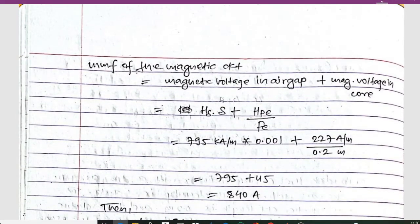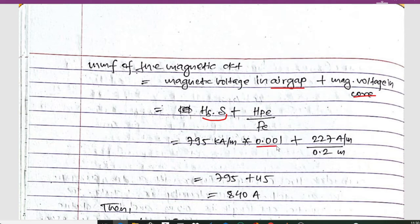The total MMF of the magnetic circuit equals the magnetic voltage in the air gap plus the magnetic voltage in the core: MMF = H_δ · δ + H_fe · L_fe. Here H_δ = 795 kA/m, δ = 0.001 m (1 mm air gap), H_fe = 227 A/m, and L_fe = 0.2 m.